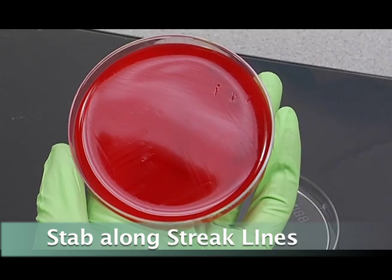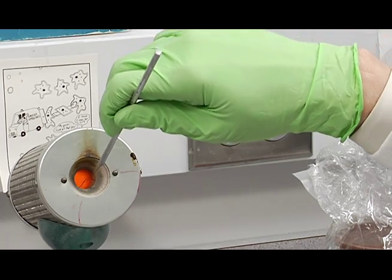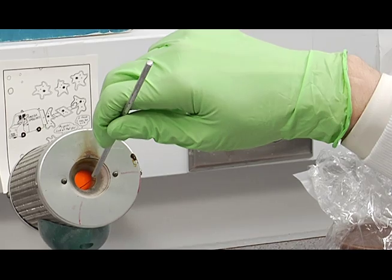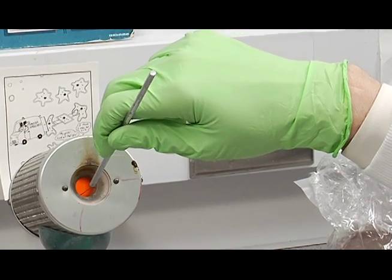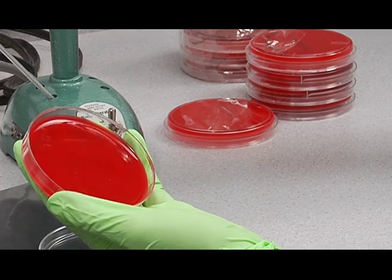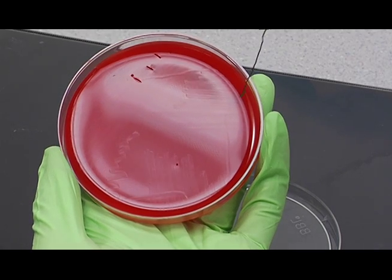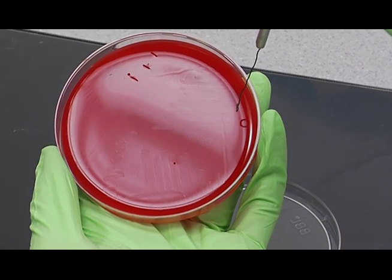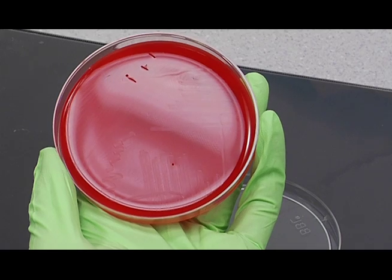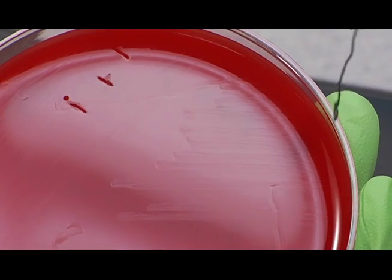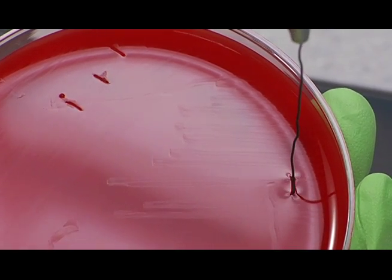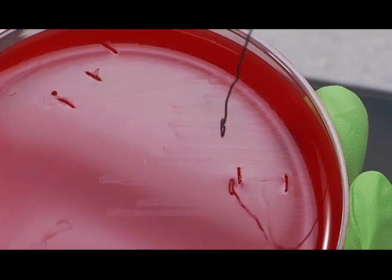Then you're going to flame the loop again. And we'll make three stabs in the end of this area right here. And stab right here, right here, and right here.